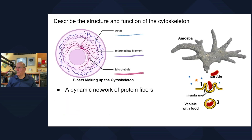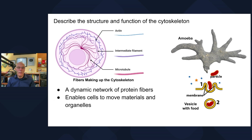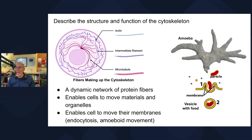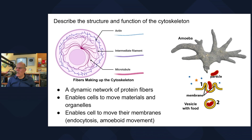The cytoskeleton is a dynamic network of protein fibers. It enables cells to move materials and organelles and to move their membranes. Even though amoebas can't swallow divers, they can swallow bacteria — and so can your white blood cells, which roam your body looking for infecting cells and engulf them in a process called endocytosis.